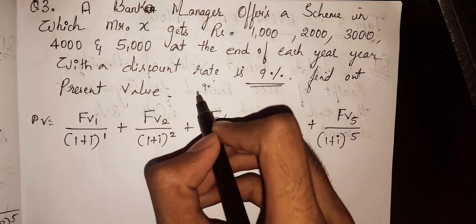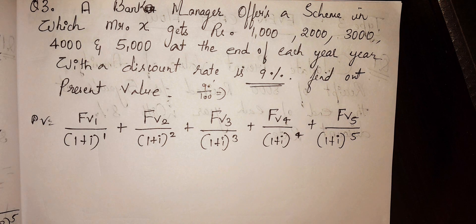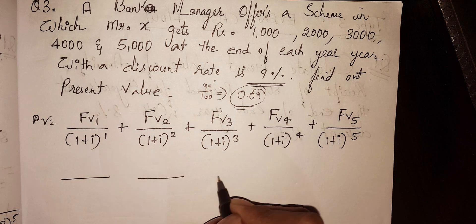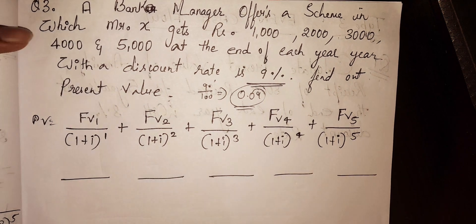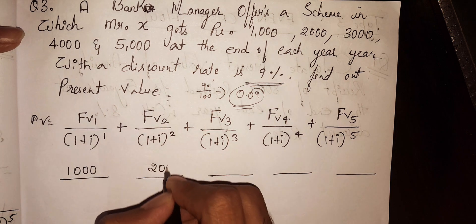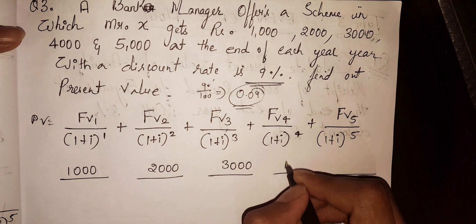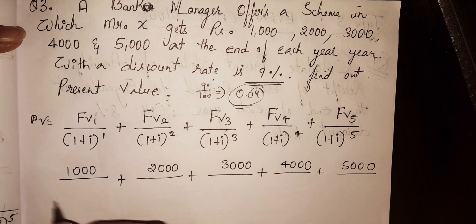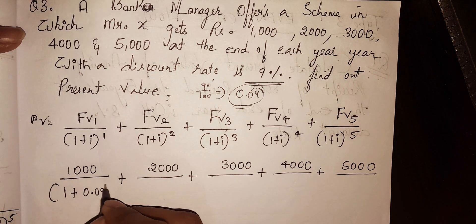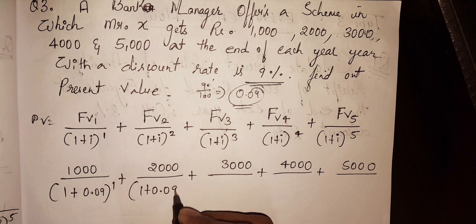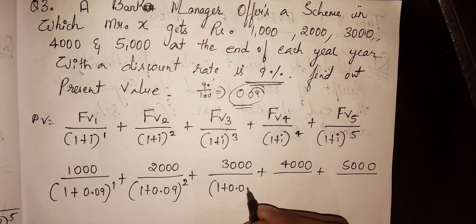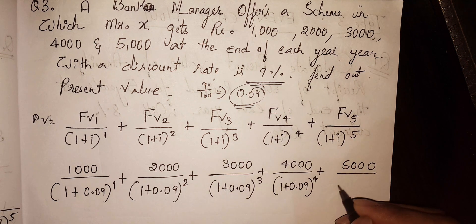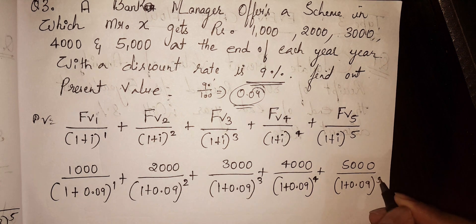So 9% is 9 by 100, which equals 0.09. Now we substitute: (1 + 0.09) to the power of 1, (1 + 0.09) to the power of 2, (1 + 0.09) to the power of 3, (1 + 0.09) to the power of 4, and (1 + 0.09) to the power of 5.